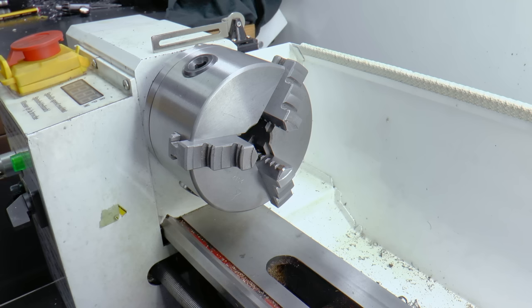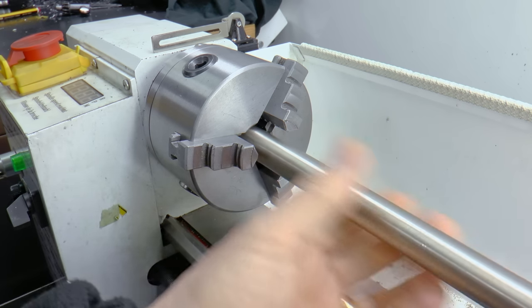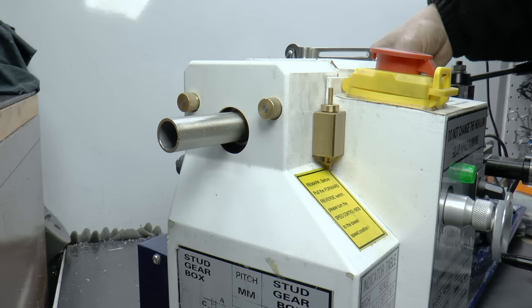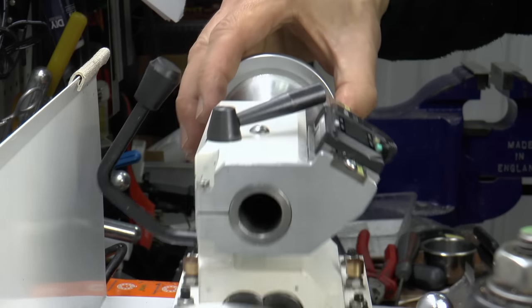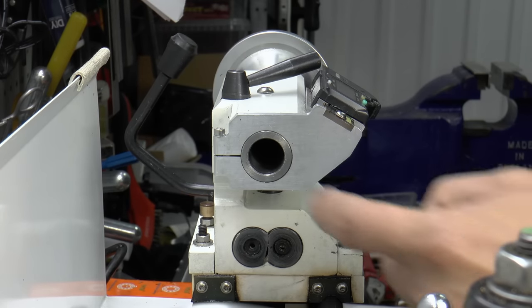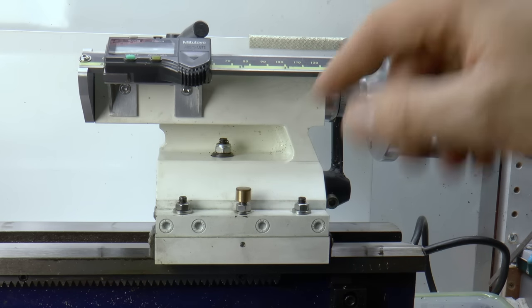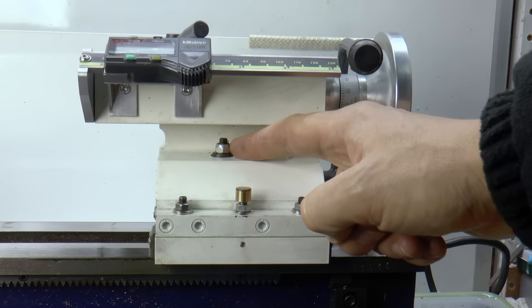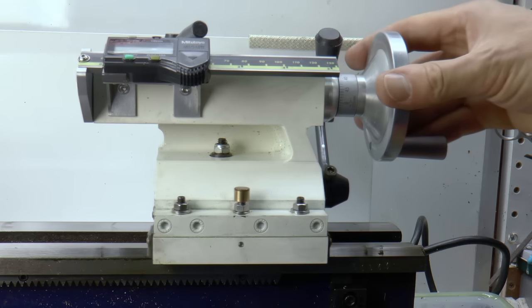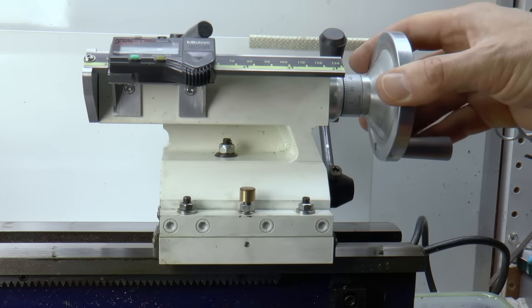The headstock is 3-morse taper and is bored through 20mm so stock slightly under that size will pass right through. The tailstock is 2-morse and this one has a lever action lock. From what I've seen the simpler nut operated type is more common. It's quick and easy to operate but needs careful adjustment to strike a balance between being able to slide freely when released and grip adequately when locked.